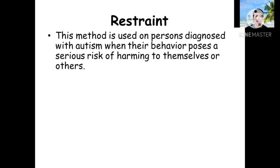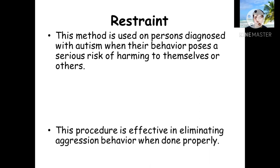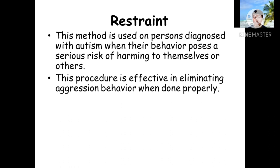To eliminate aggression behavior — such as self-injurious behavior and hurting others — we use physical restraint. This method is used on persons diagnosed with autism when their behavior poses a serious risk of harming themselves or others. This procedure is effective in eliminating aggression behavior when done properly.